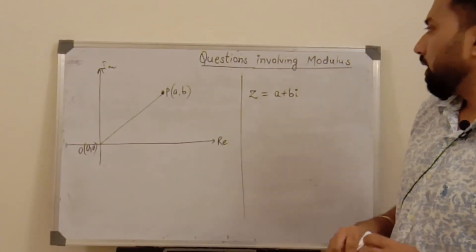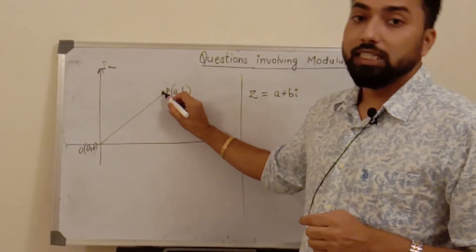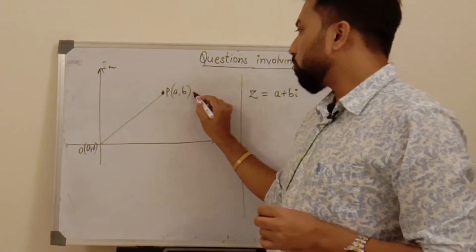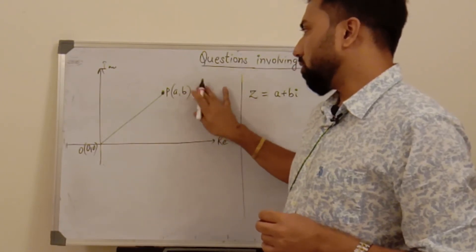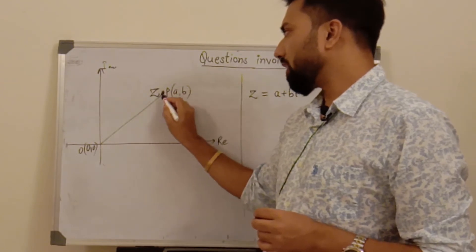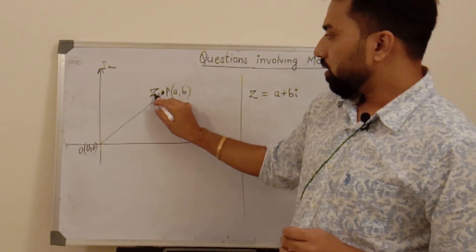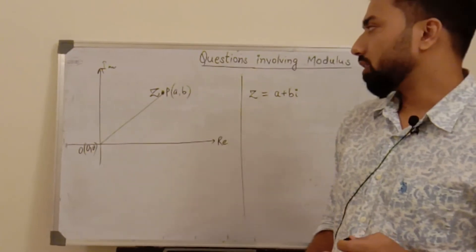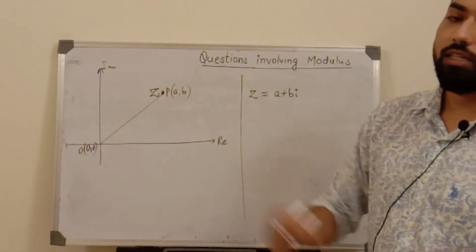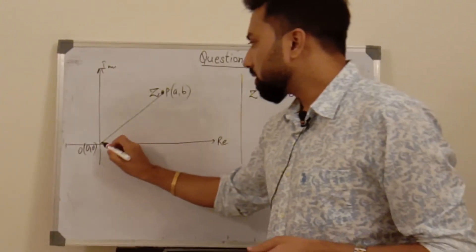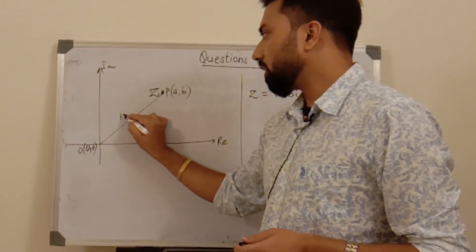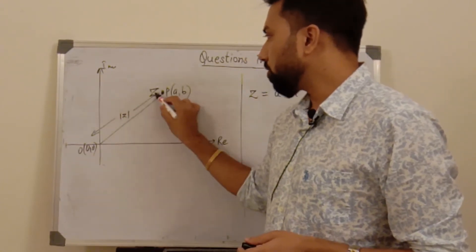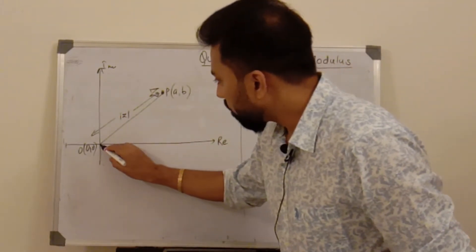The concept of modulus is: whatever is the distance between the origin and this point — this point corresponds to the complex number z. The distance of the origin from this point represents the modulus, or magnitude, of the complex number z. This length OP would be mod z, represented as |z|. So this distance from origin to P is |z|.